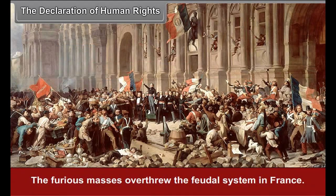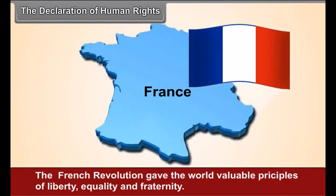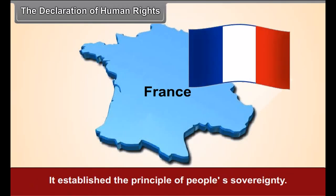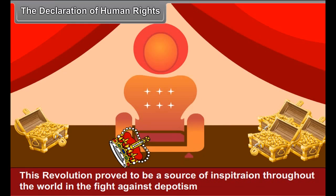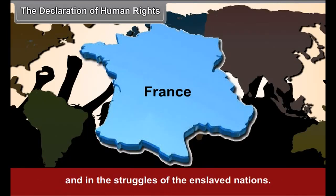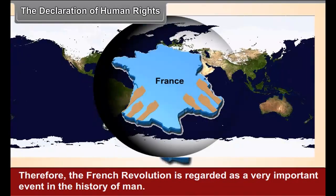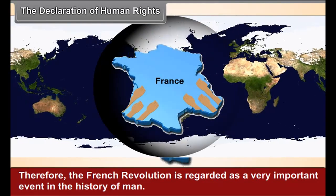The furious masses overthrew the feudal system in France. Louis XVI, the King of France, was beheaded, and people established their rule. The French Revolution gave the world the valuable principles of liberty, equality, and fraternity. It established the principle of people's sovereignty. This revolution proved to be a source of inspiration throughout the world in the fight against despotism and in the struggles of the enslaved nations. Therefore, the French Revolution is regarded as a very important event in the history of man.